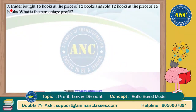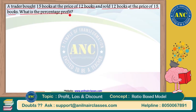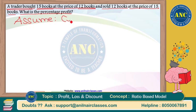Please see this question. A trader bought 15 books at the price of 12 books and sold 12 books at the price of 15 books. Find his profit percentage. What they are saying is: a trader bought 15 books at the price of 12 books. Assume that the cost of one book is one rupee.